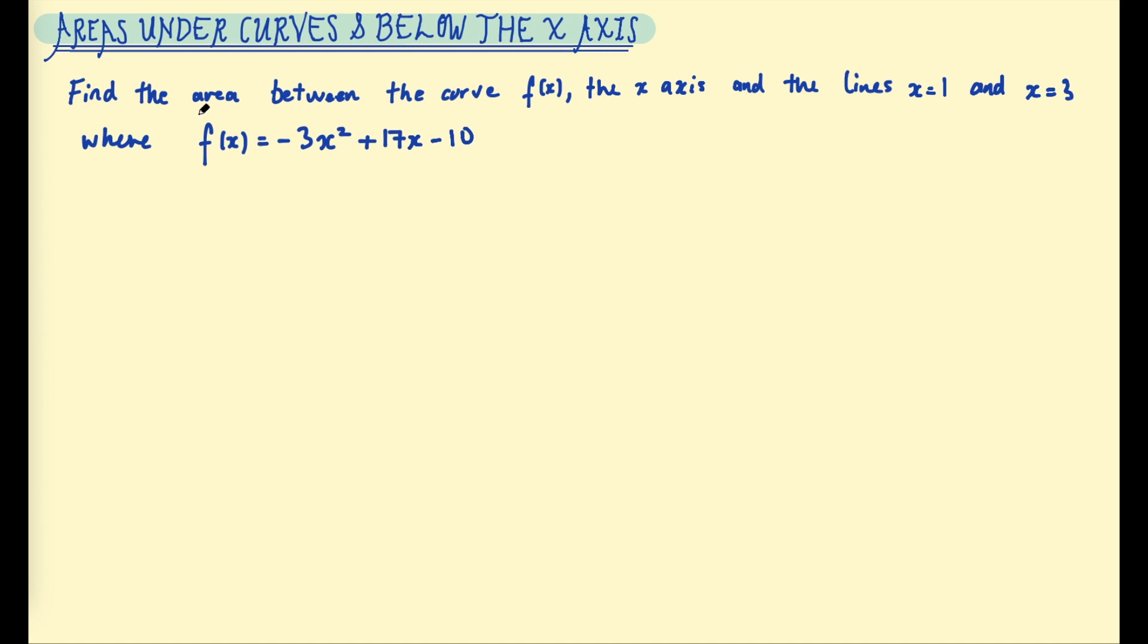In this video we're looking to solidify what we've covered so far and extend that as well. The first example says find the area between the curve f(x), the x-axis, and the lines x=1 and x=3, where f(x) = -3x² + 17x - 10. The first thing we want is a sketch of the curve to understand if the area is above or below the x-axis. I can already see because this is a negative quadratic it will be above the x-axis, but it's still good practice to sketch the curve each time.